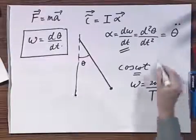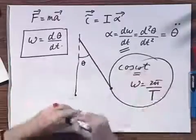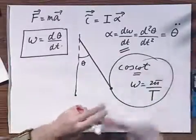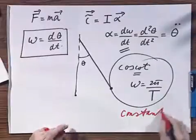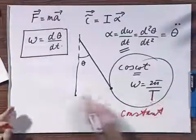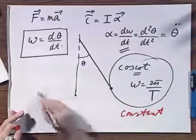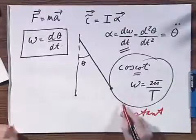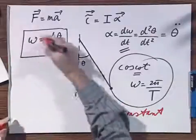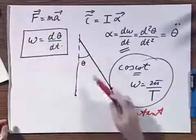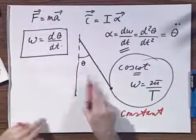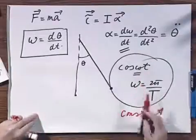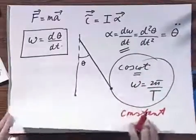This one, this omega, is constant all the time. It doesn't change because, effectively, what it states, it relates to the period of oscillation. This omega is changing all the time. It's zero here, and it reaches a maximum here. So I cannot be specific enough to point out to you that these omegas are very different.